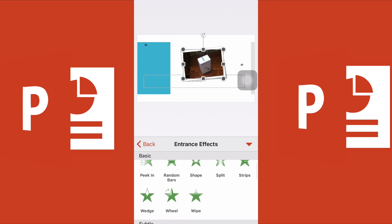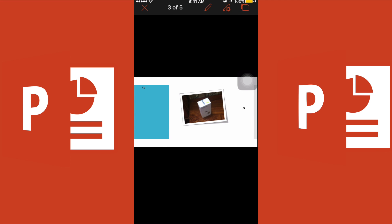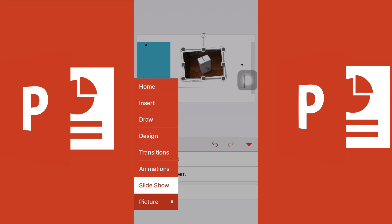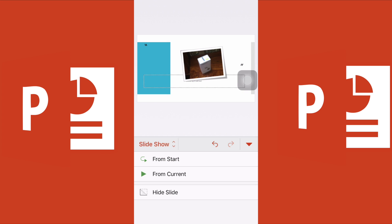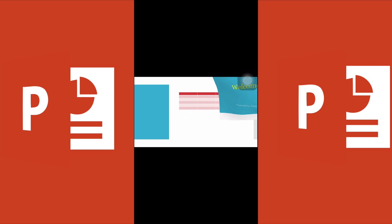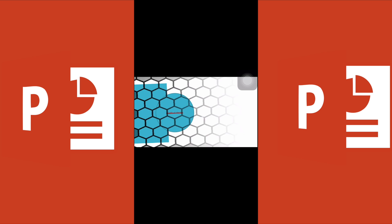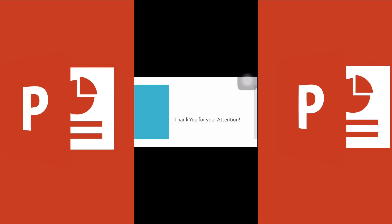You can also add animations to pictures. Select the picture, go to animations, choose an effect like 'Rise Up,' and play it. You can run the slideshow from the current slide or from the beginning. Watch as the transitions and animations play — slide one of five, with the welcome text flying in.